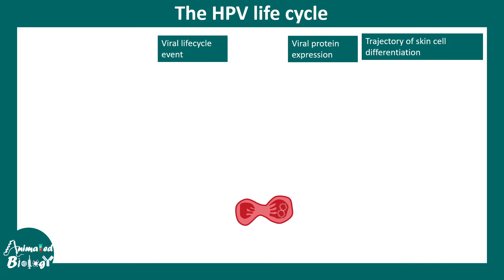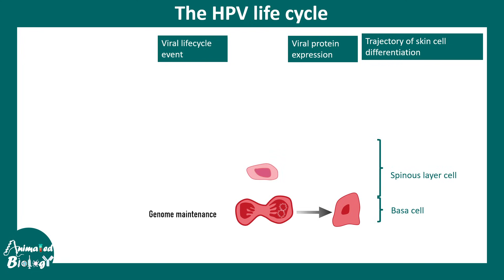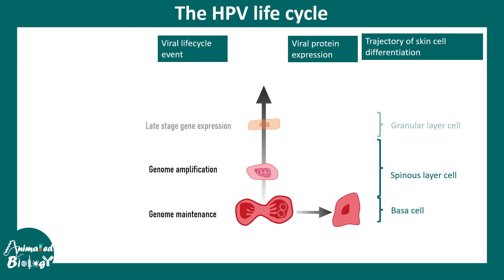In the basal cell, HPV injects its genetic material. As these cells divide, more and more cells carry the HPV genetic material — this is a genome maintenance mode. As cells divide, HPV increases in number. In the spinous cell layer, genome replication or amplification of the genome takes place.